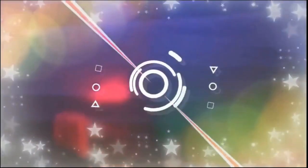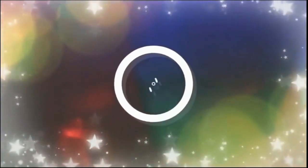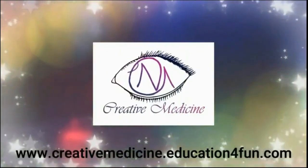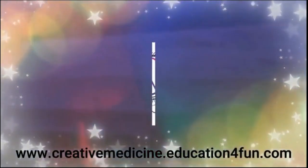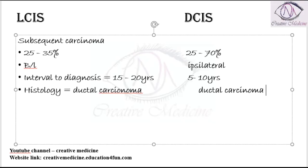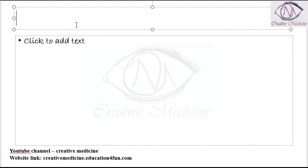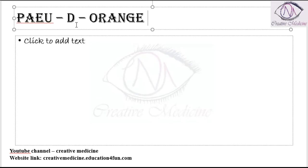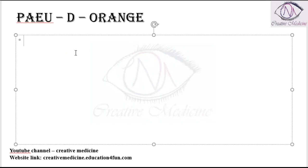Hello friends, welcome to Creative Medicine. In this lecture we will learn about peau d'orange appearance. Peau d'orange appearance is an external appearance of the breast. This occurs due to cutaneous lymphatic edema.